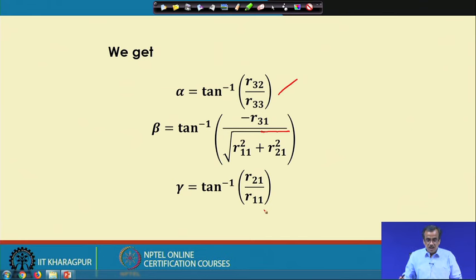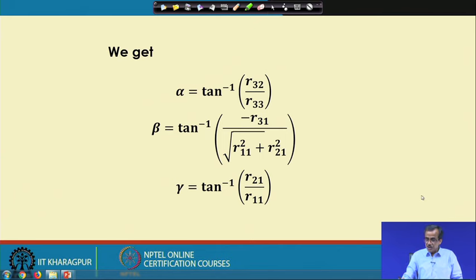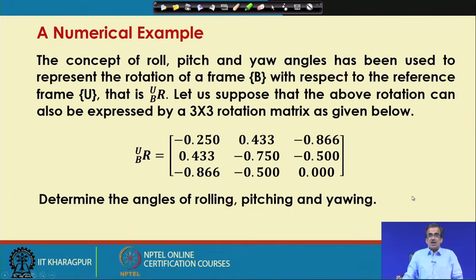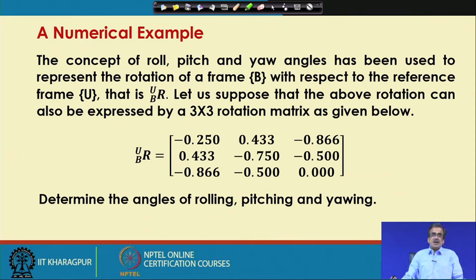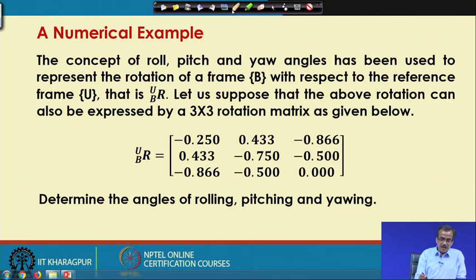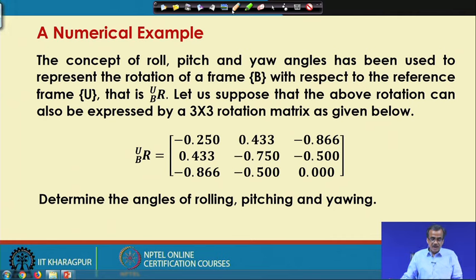That is why the orientation of the robot can also be expressed using the principle of roll, pitch and yaw. To explain it further, I am going to take the help of a numerical example. Using this numerical example, we will understand that we can very easily find out the angles for rolling, pitching and yawing.